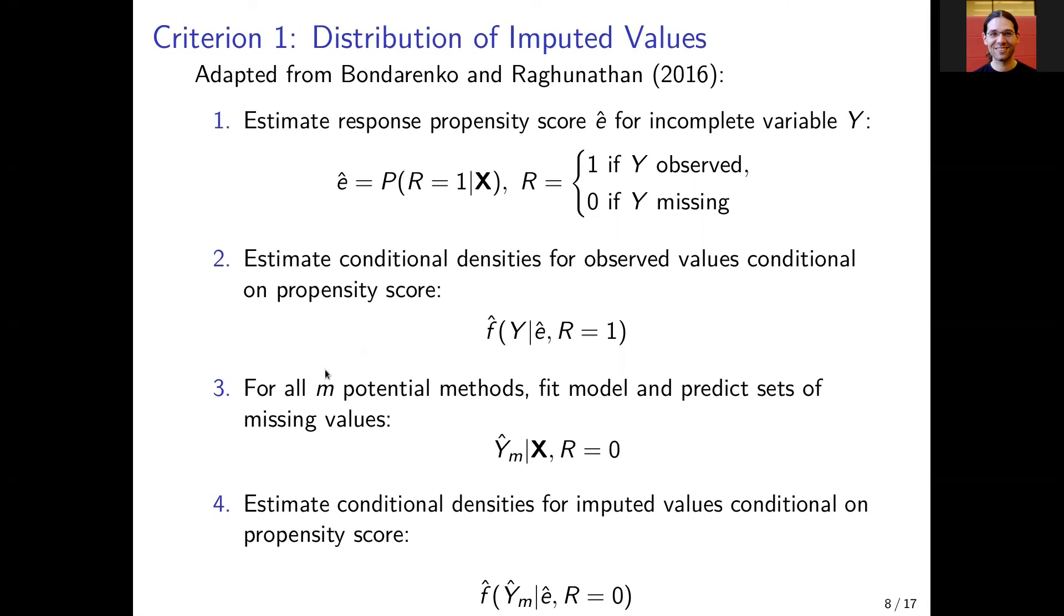Number three, we do for all potential methods that are used for imputation: fit the model and predict the sets of missing values based on all covariates X.